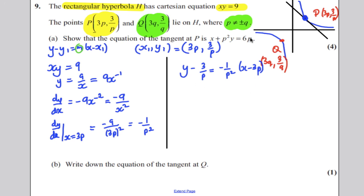Now, rearranging this, we'll get it in the form they ask. Easiest thing to do, I'd say, is multiply everything by p². So we get p²y, subtract,